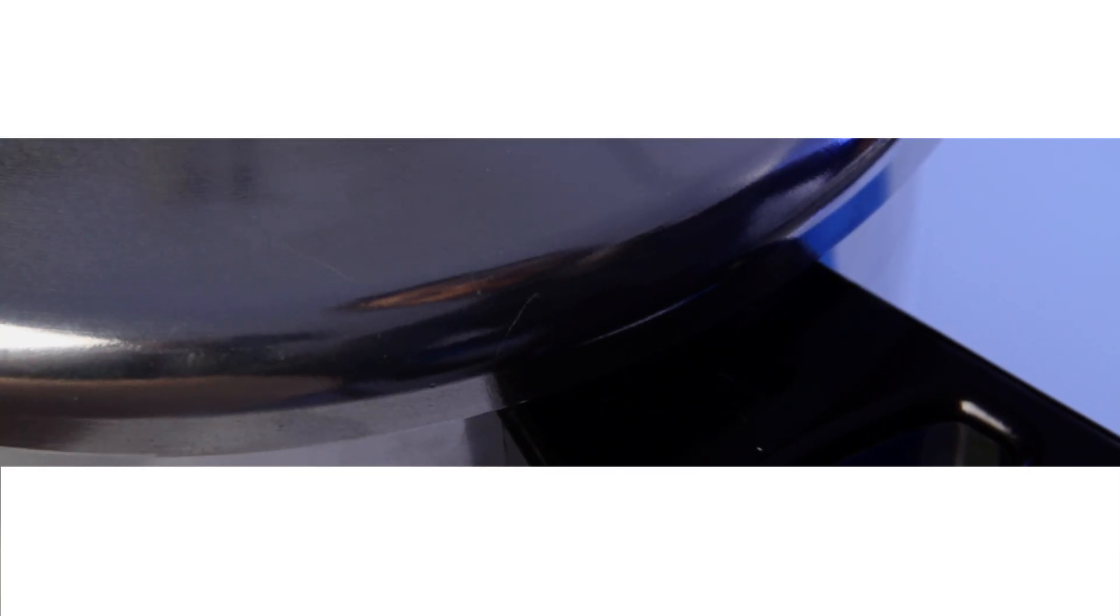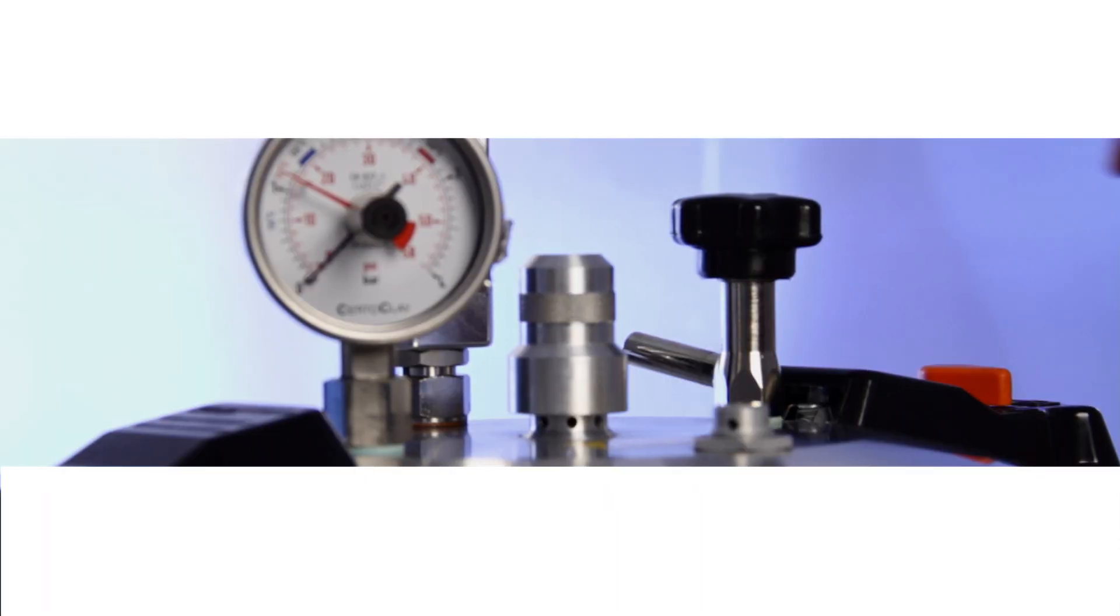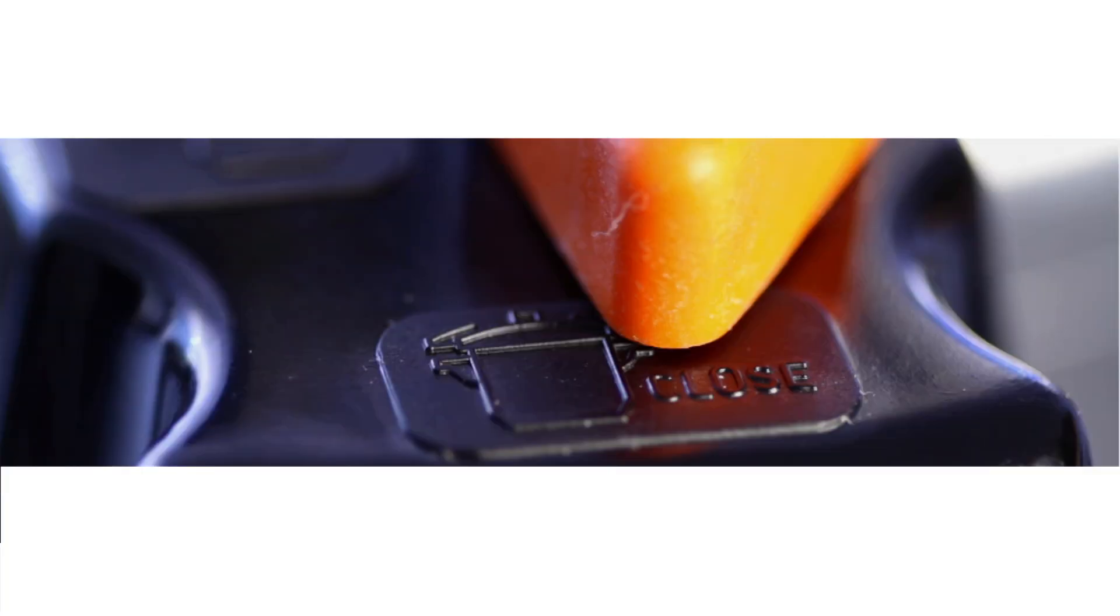Place the lid and secure it by gently sliding the Certolock shutter. Use the orange button to lock it. This ensures the kettle cannot be opened under pressure.